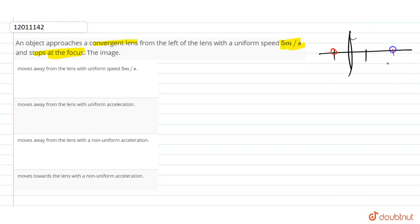When the object is at 2F, the image forms at 2F. The image moves away from the lens, which means option D, which says it moves towards the lens, is wrong.